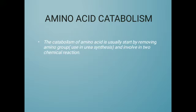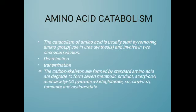The next topic is amino acid catabolism. Catabolism of amino acids usually starts by removing the amino group, which is used in urea synthesis, and involves two chemical reactions: deamination and transamination. The carbon skeletons formed from standard amino acids are degraded to form seven metabolic products: acetyl-CoA, acetoacetyl-CoA, pyruvate, alpha-ketoglutarate, succinyl-CoA, fumarate, and oxaloacetate.